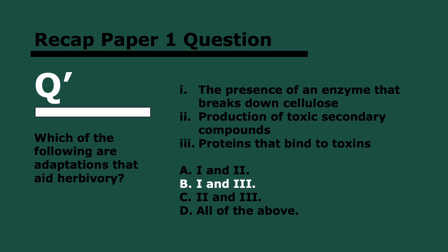The answer is one in three. Production of toxic secondary compounds wouldn't help you eat plants because plants don't need to be paralyzed or killed. In any case, you would produce antitoxins — proteins that bind to toxins to inhibit them. And one makes sense because cellulose is part of plants, so you need to be able to digest it if you're going to eat them.